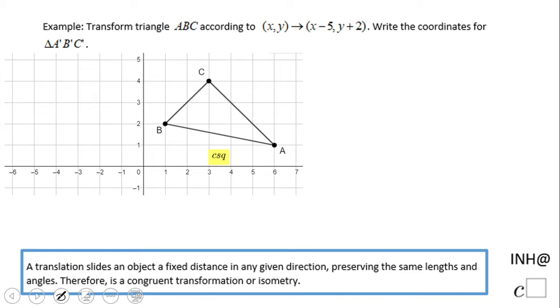Welcome to I Need Help at C Squared. In this problem we're going to look at rigid transformation, which is translation. Whenever you see this rule, that is a translation, which is a rigid transformation. You can hear congruent transformation or isometry. So let's take a look at this problem.